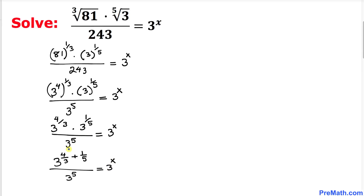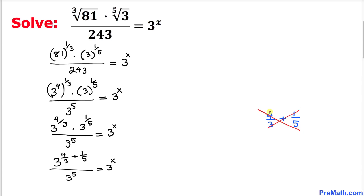Now let's focus on the exponent 4 over 3 plus 1 over 5. We'll add these two fractions using the crisscross method: cross multiply to get 4 times 5 = 20, plus 3 times 1 = 3, over 3 times 5 = 15. That gives us 23 over 15.